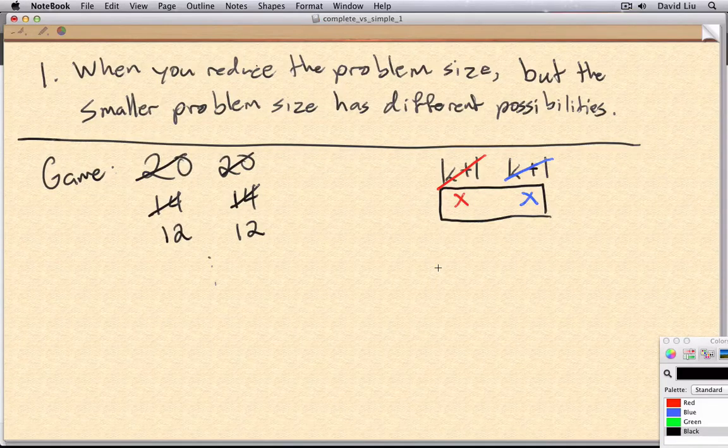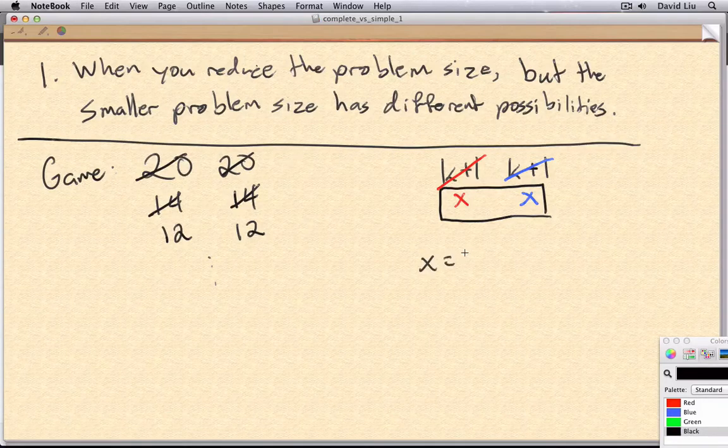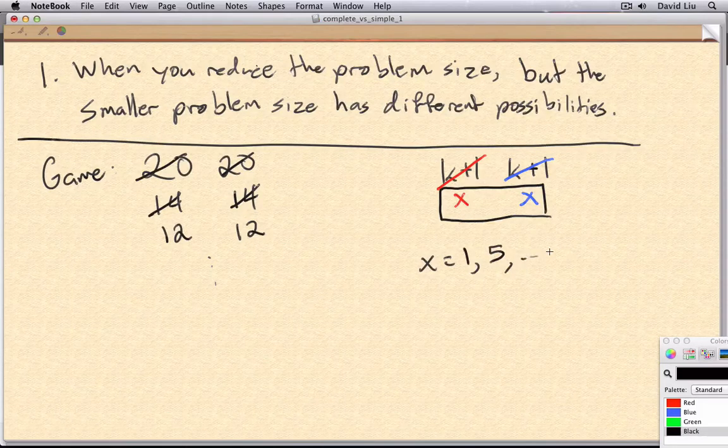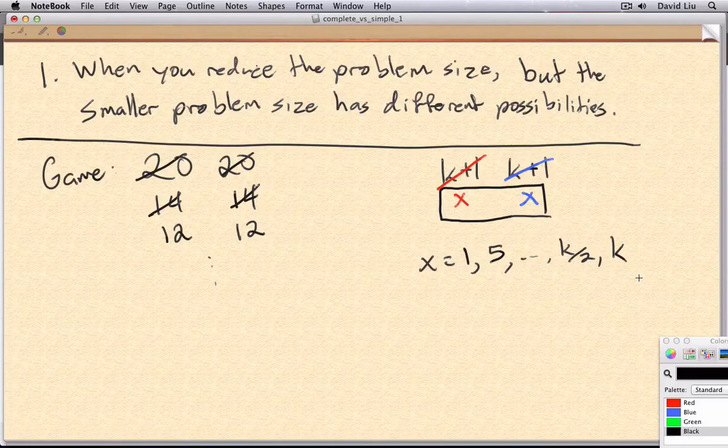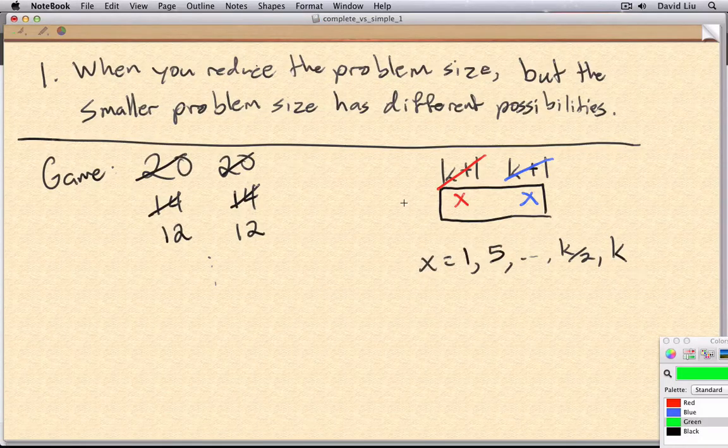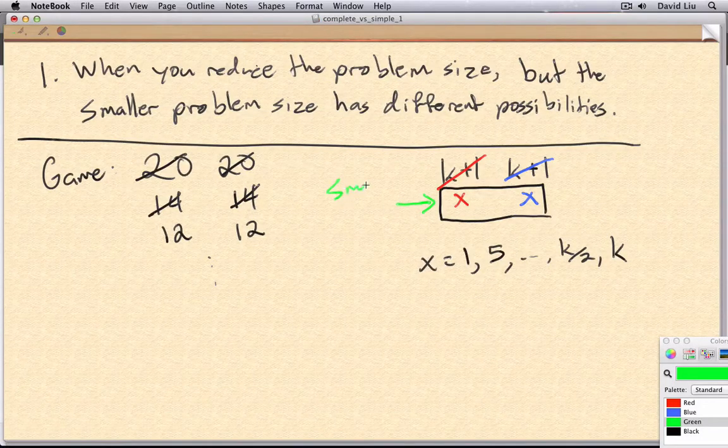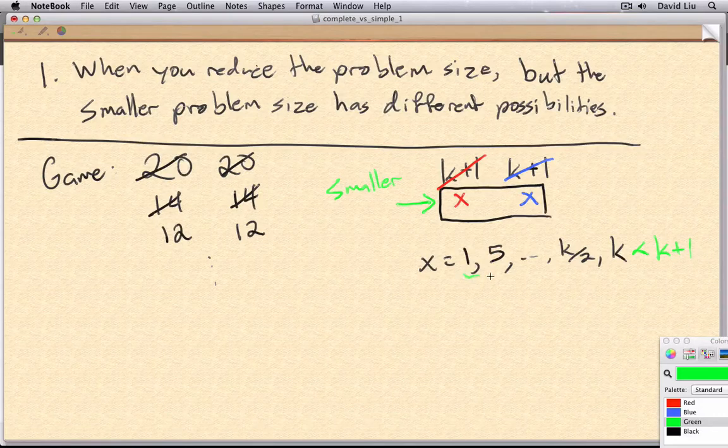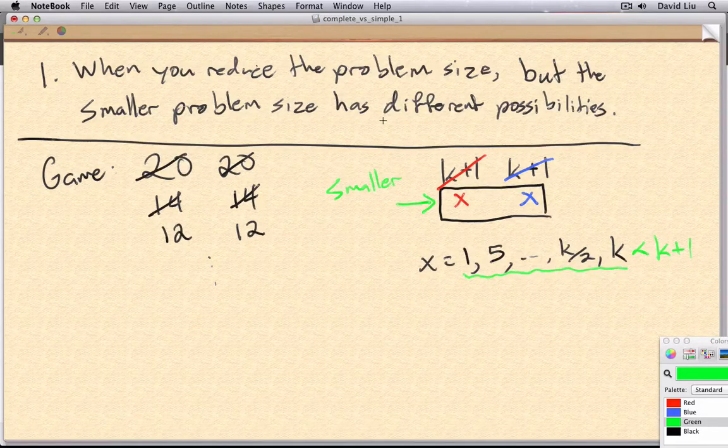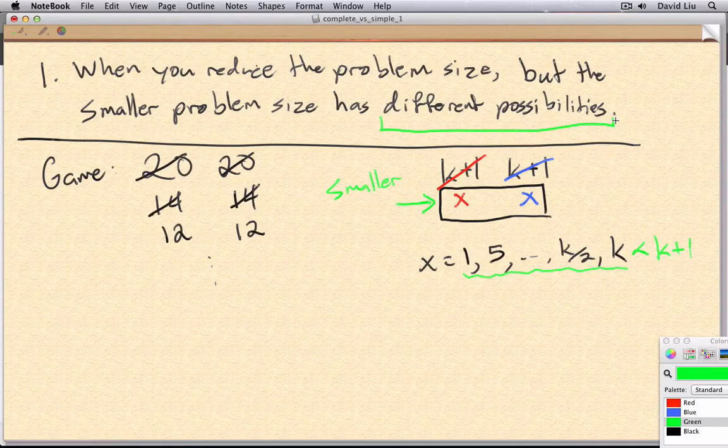Unfortunately, we didn't know much about x. x could have been 1, it could have been 5, it could have been k/2, or k. And so even though we knew we had a smaller problem, that is we knew that x was less than k+1, we didn't know exactly what x was. We had different possibilities of x.